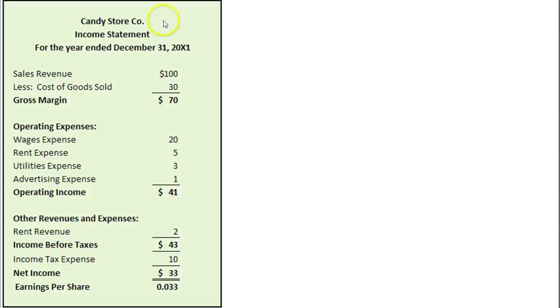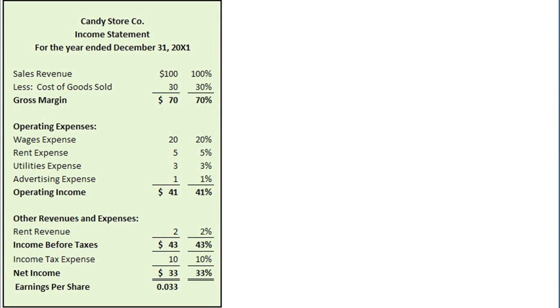Although a multi-step income statement is helpful to users as is, it becomes even more helpful when the amounts on the income statement are all computed as a percentage of sales revenue to common-size them. Let's take a minute to see what this common-size income statement can reveal and how analysts might use it. The percentages in the far right-hand column were all computed by taking the noted account balance and dividing it by the sales revenue amount.